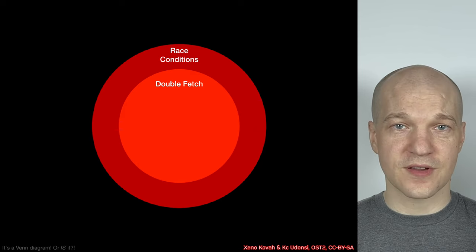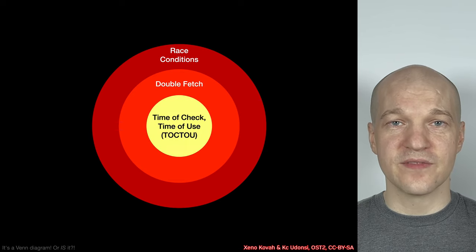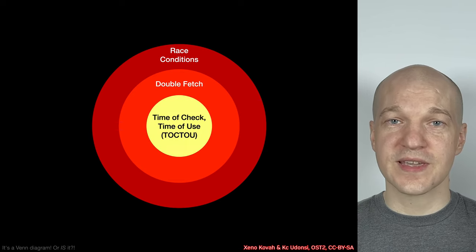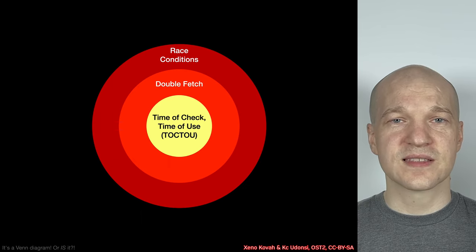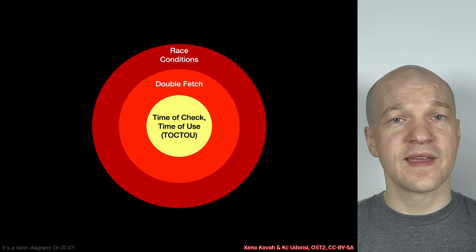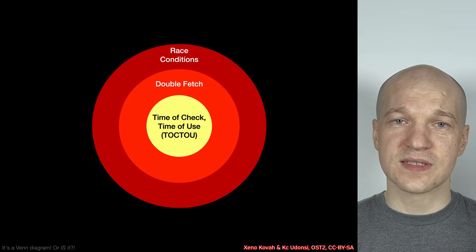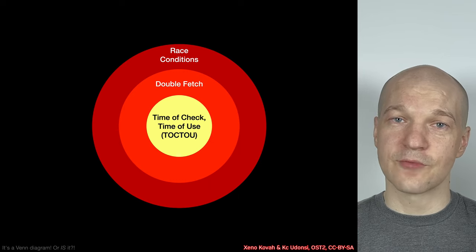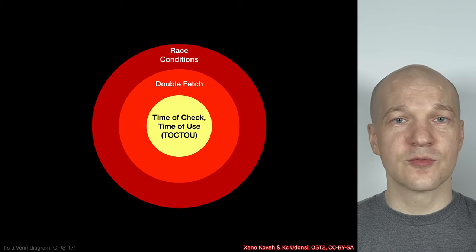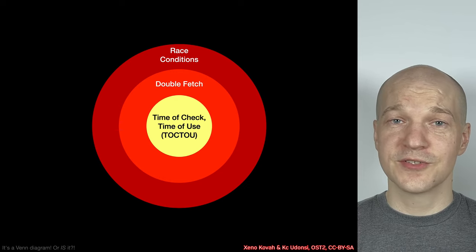All double-fetches are race conditions, but not all race conditions are double-fetches. A subset of the double-fetch vulnerability is the TOCTOU vulnerability — time of check, time of use. That is a situation where you fetch once, check something, then fetch again and use it. But between the time that you checked it and you used it, a race condition could have occurred and the attacker could have swapped out something that was clean at check time with something that is malicious at use time.